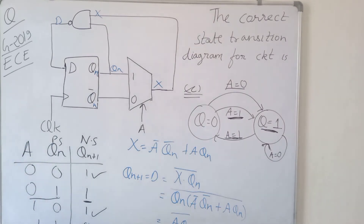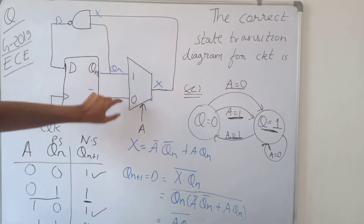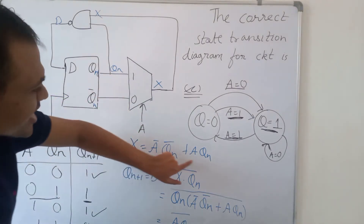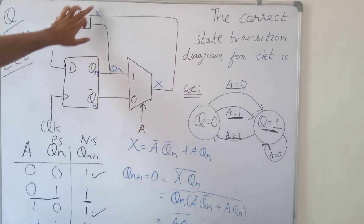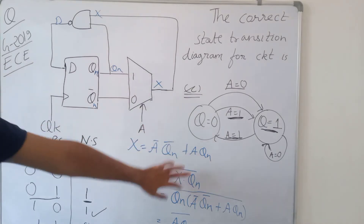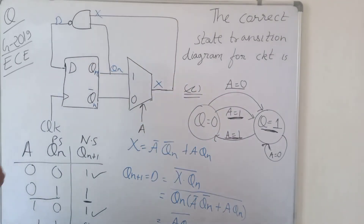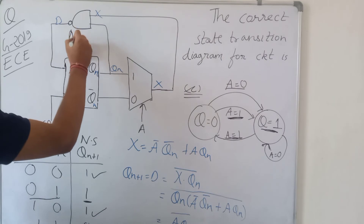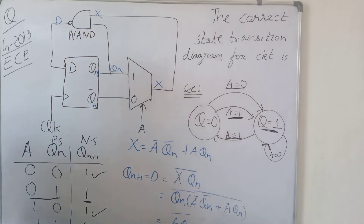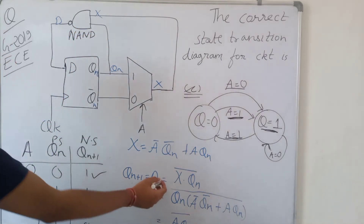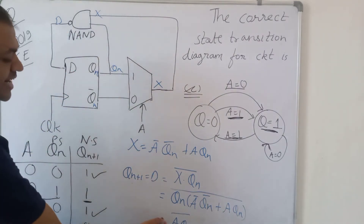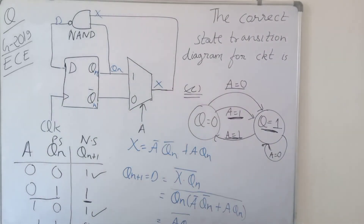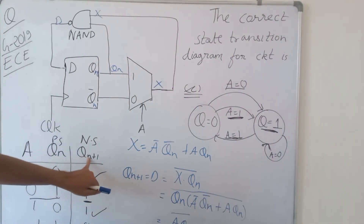This is the state transition diagram. To recap: Qn+1 = D and X = ā·Qn̄ + a·Qn. Then D = (X·Qn)̄ because this is a NAND gate. Substituting and simplifying gives Qn+1 = a·Qn̄, where Qn is the present state and Qn+1 is the next state.